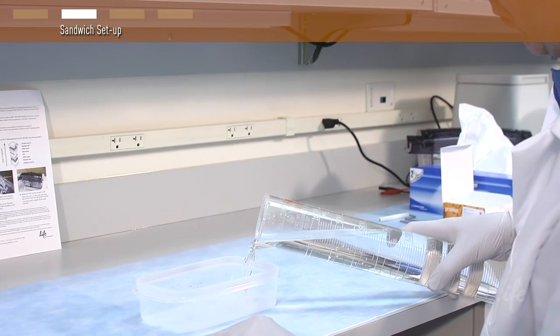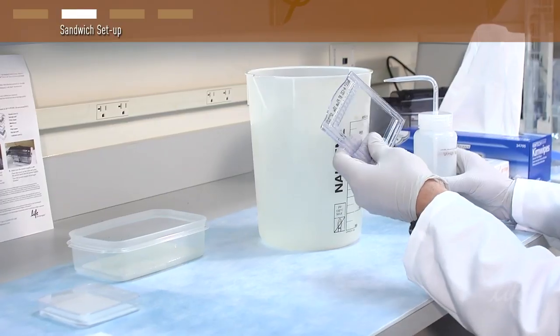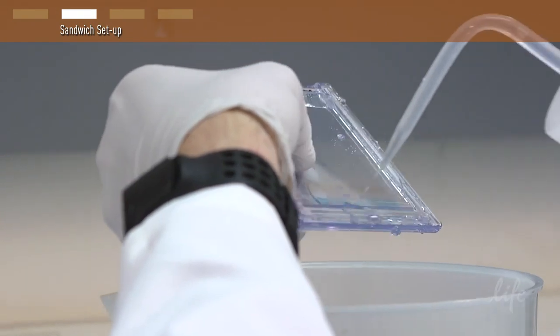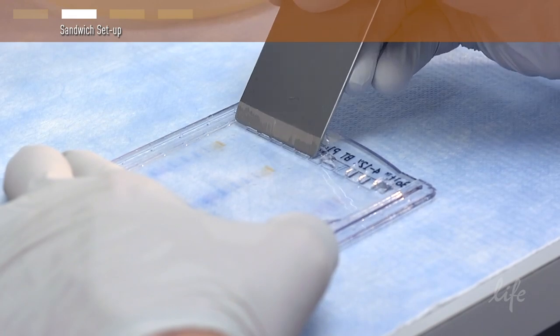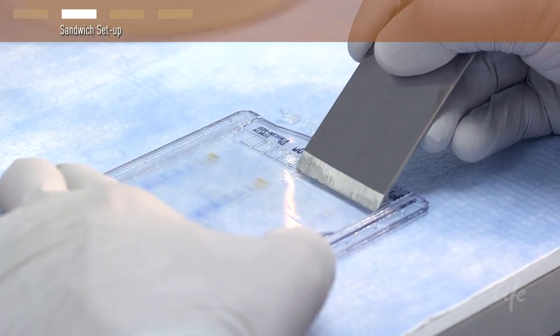Soak two sponge pads in 1x transfer buffer and squeeze the pads to remove air bubbles. Prepare the gel for transfer by first rinsing the gel cassette with water. Open the gel cassette using a gel knife. Carefully remove the wells and the foot of the gel using the gel knife so that the entire gel is of equal thickness.